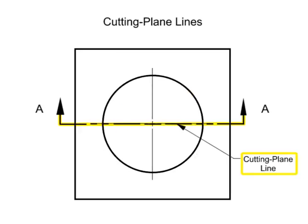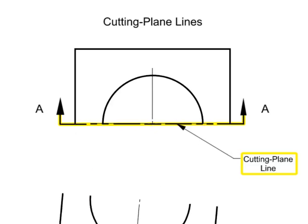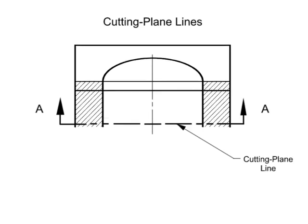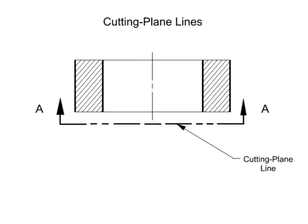Cutting plane lines are used to indicate a plane or planes in which a section is taken. The arrows at the end of the cutting plane line indicate the direction of the view, or the direction your eyes look, after the cut is taken.